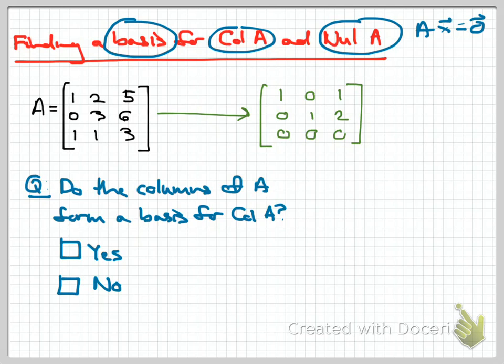Let's start with this simple 3 by 3 matrix A. In green you see the reduced row echelon form of A. Concept check: do the columns of A — the three vectors (1, 0, 1), (2, 3, 1), and (5, 6, 3) — form a basis for the column space of A? Think about this carefully, especially the definitions of the terms. Pause the video and make your selection and come back when you're ready.